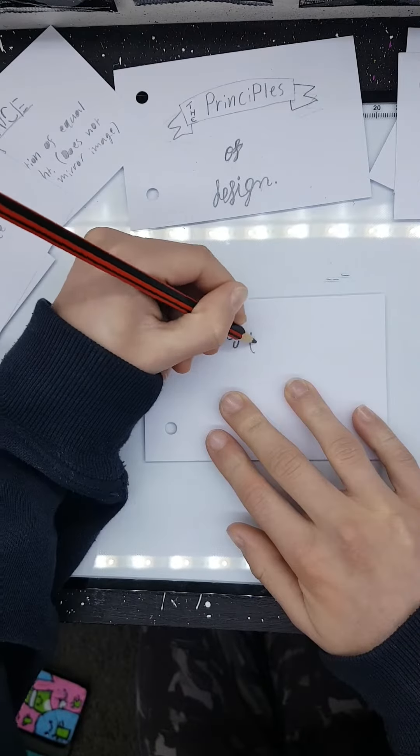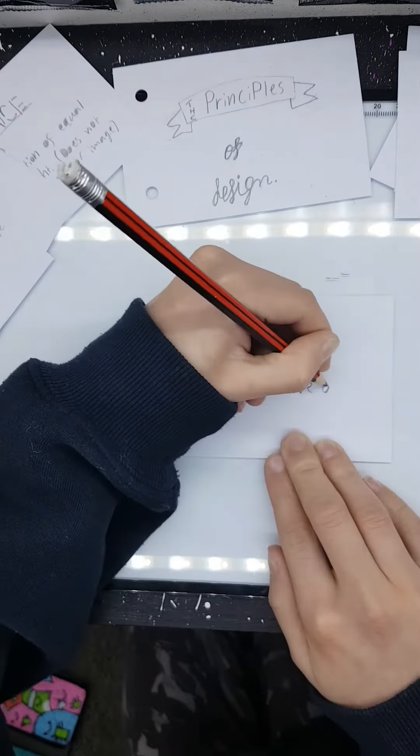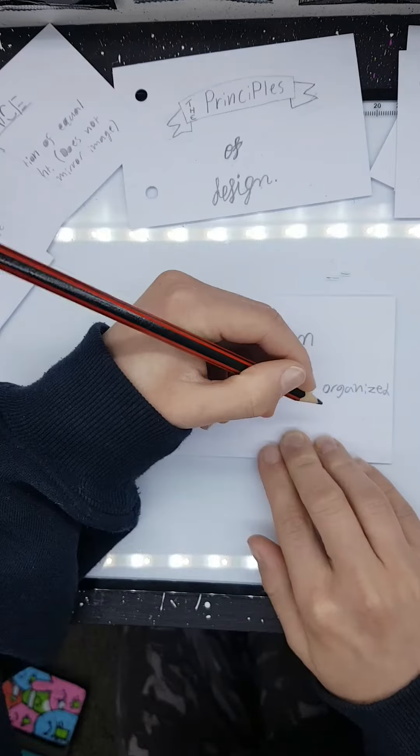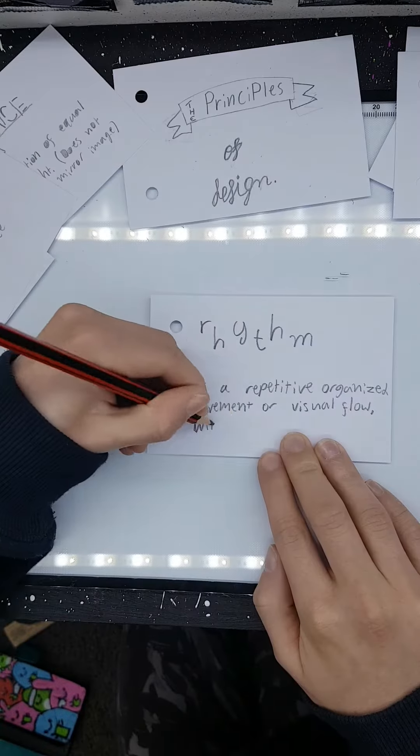Rhythm is a repetitive, organised movement or visual flow within an image. Rhythm is basically repetition and pattern combined.